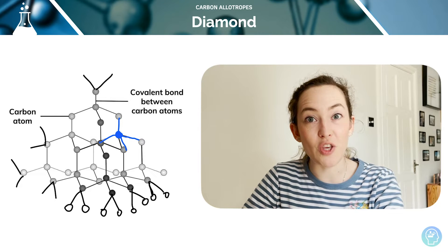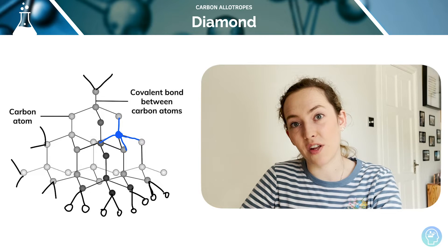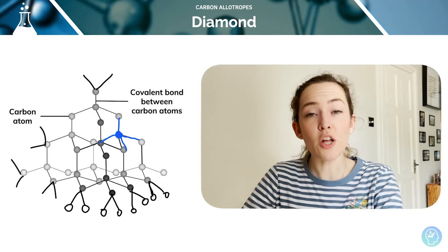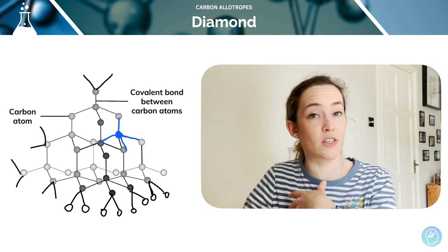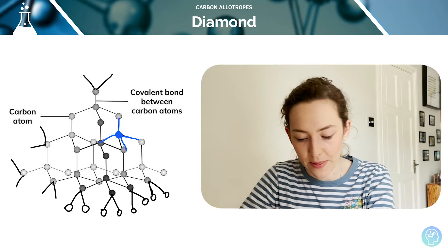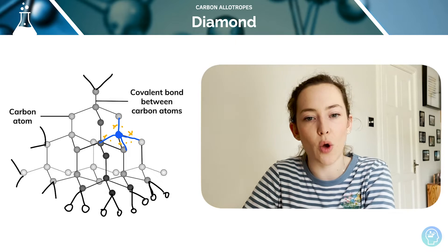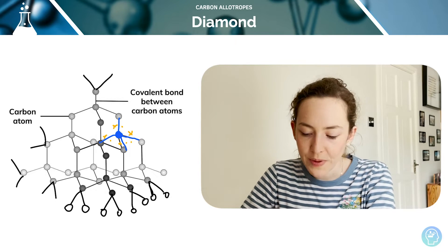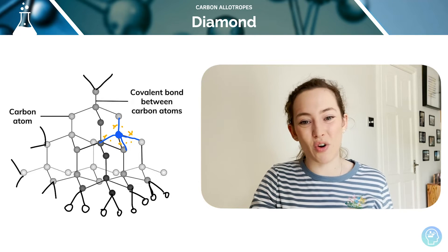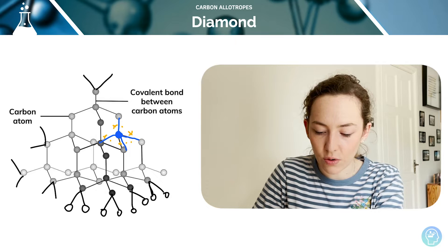Diamond has very high melting and boiling points, which is why we use it in a lot of industry — a large amount of energy is needed to break these covalent bonds. It's a good thermal conductor, so the strong covalent bonds mean that thermal energy is quickly transferred through the diamond. It's a really poor electrical conductor because the electrons are fixed in the covalent bonds — they are not in a sea of delocalised electrons, they can't go anywhere and so cannot carry a charge. And of course, diamond is insoluble — the covalent bonds are so strong that any attraction with the solvent is not going to form. It's insoluble in water and organic solvents.